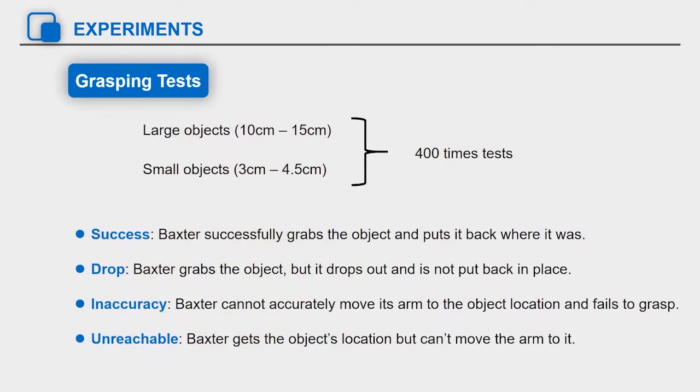For grasping tests, we conducted tests for five large and five small objects respectively. 200 experiments were conducted on large and small objects respectively, total of 400, each of which results in one of the following four conditions.